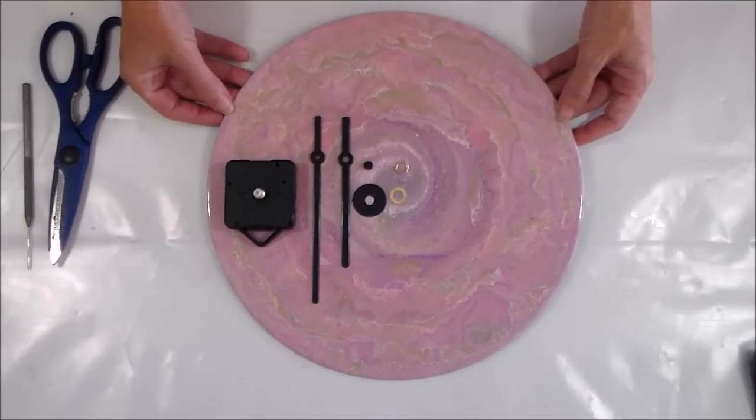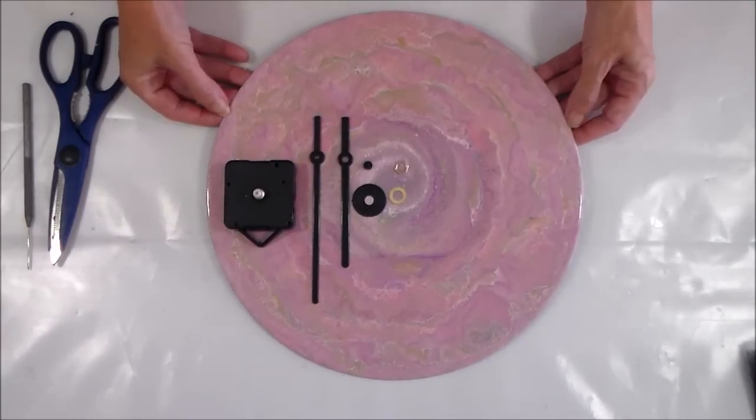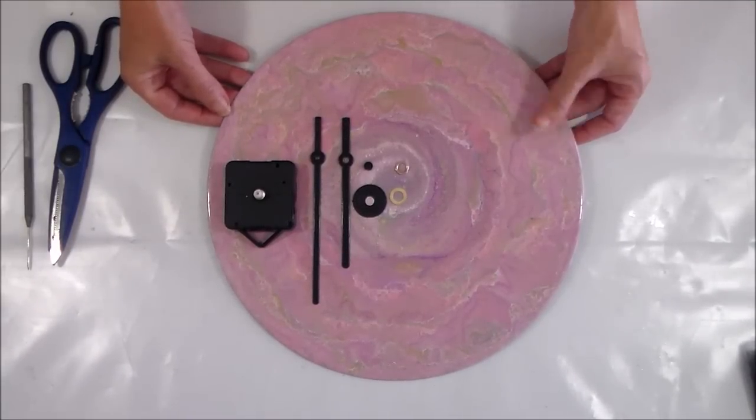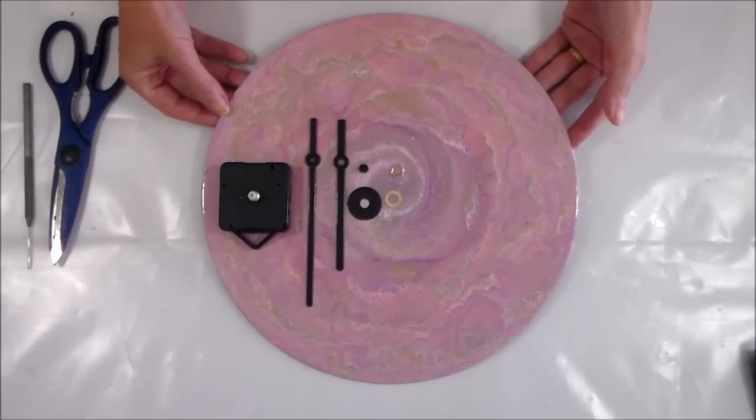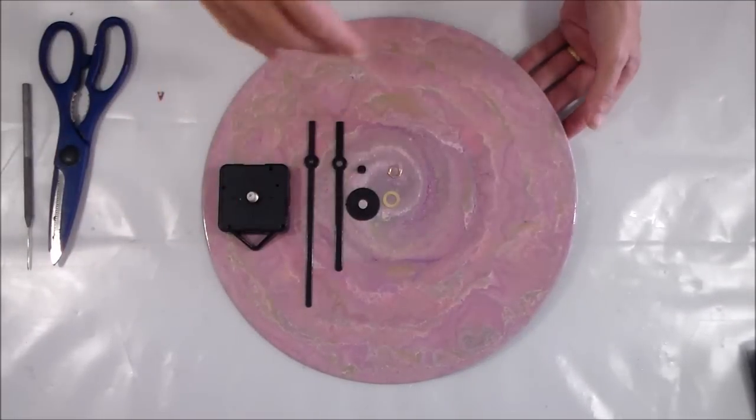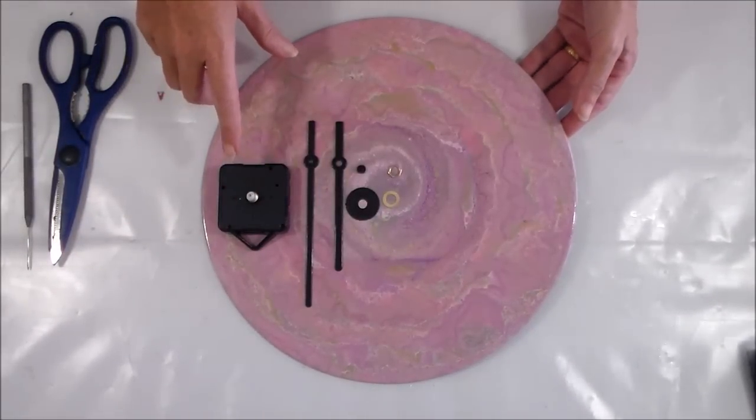Hello painters, it's Debbie from acrylicpouring.com and as you can see I'm revisiting one of my previous projects today. This is a pastel colors spinning record pour that I did and today I'm going to try and turn this into a clock.